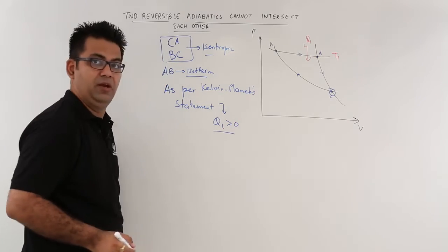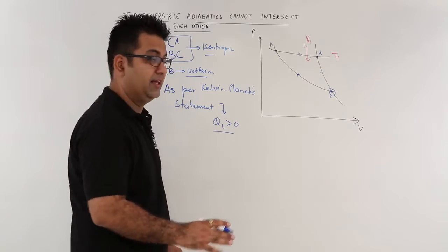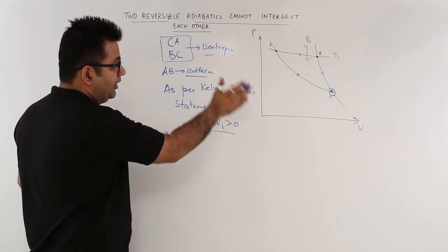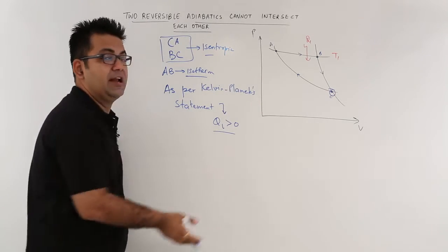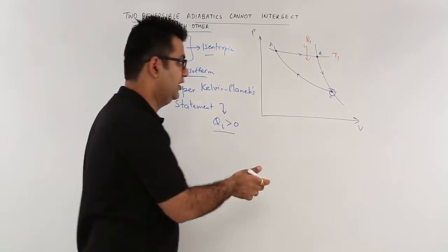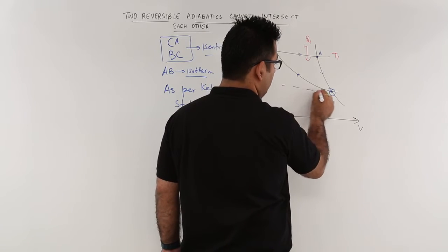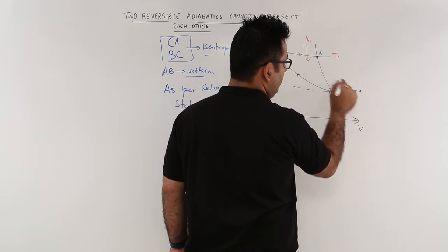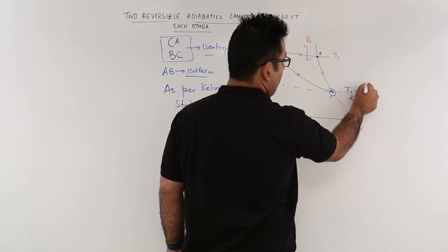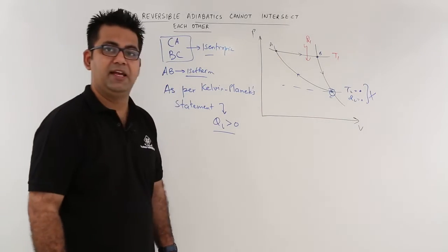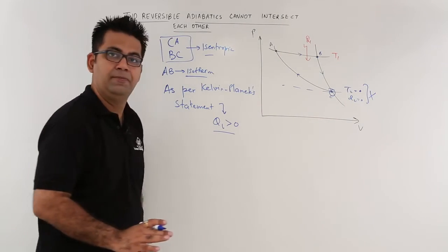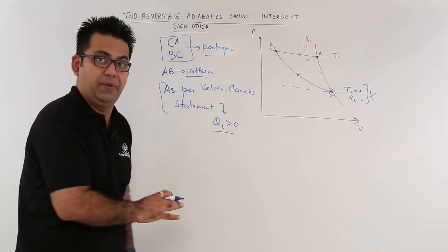This should be a positive value. It can never be zero and there has to be an operation that occurs between two temperature limits. So here T2 is zero and QL is also zero. So this is in violation of the Kelvin-Planck statement. Because it is violating the statement.